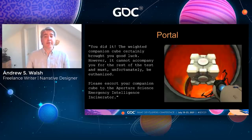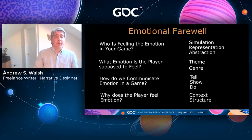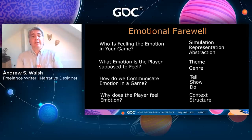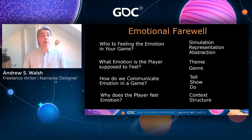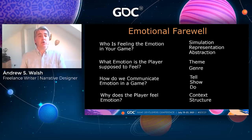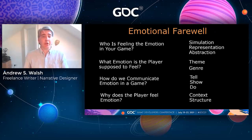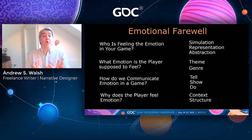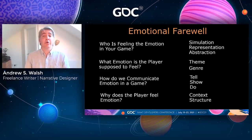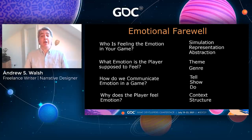Can a computer make you cry? Yes, it can. To sum up: when examining emotion in games, there are four main things to think about. Who is feeling the emotion — simulation, representation, abstraction. What emotion is the player supposed to feel — theme, genre. How do we communicate emotion — tell, show, do. And why does the player feel emotion — context, structure. By looking at emotion as interactive, as something to interpret, you can go forth and help the player to fall in love, cry, hope, dream and explore a thousand different emotions — all while keeping them in the game. Good luck. Thank you very much for coming along today. Have fun and be emotional out there.